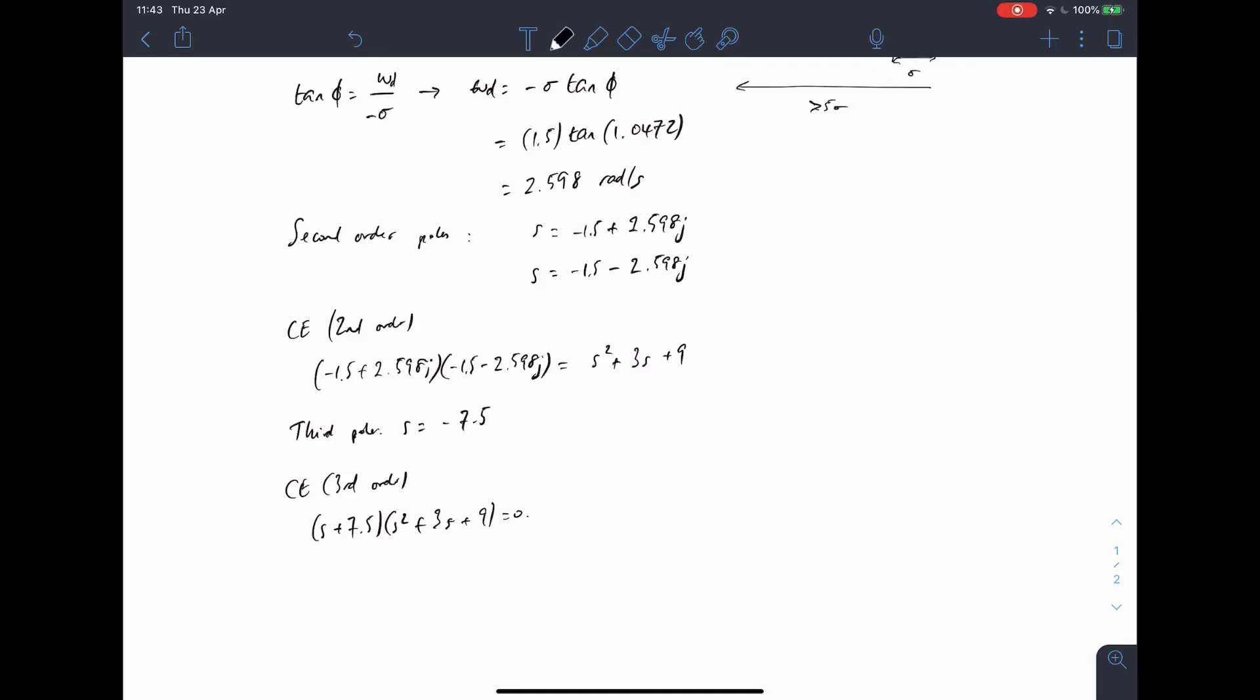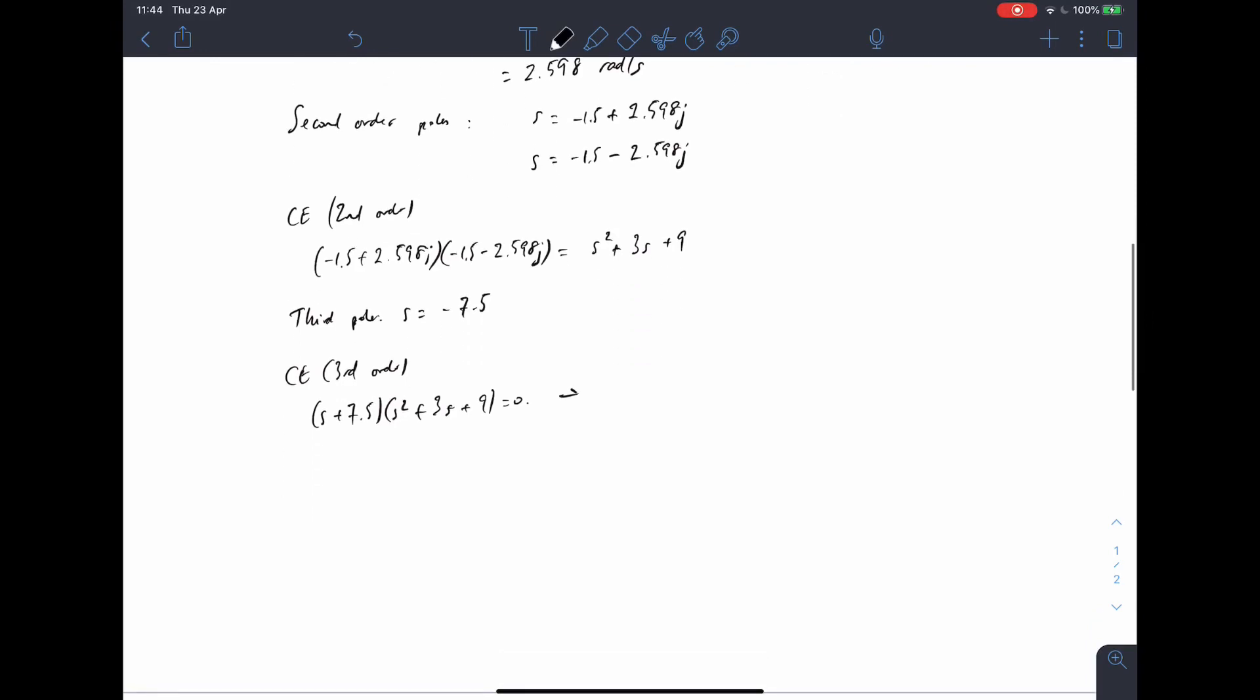And so let's multiply that out. We've got S to the power of 3, plus 3S squared plus 9S plus 7.5S squared plus 22.5S plus 7.5 times by 9, 67.5, equals zero.